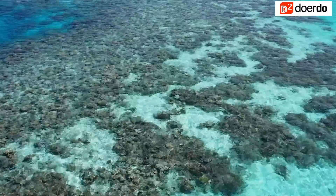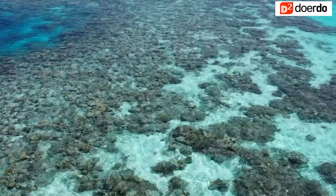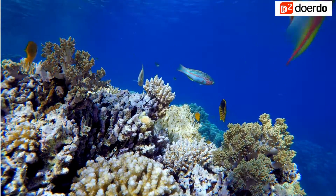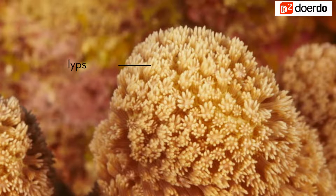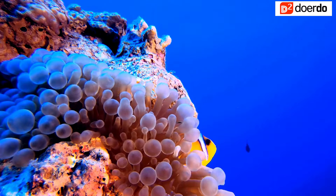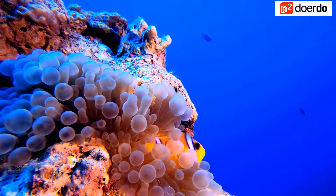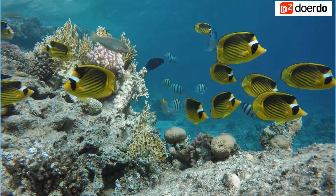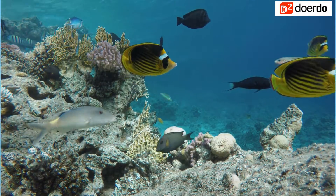Coral reefs are marine ecosystems found at, or slightly below sea level on the seabed. A coral reef is a limestone rock, which is made up of skeletons of small living organisms called polyps. These polyps secrete calcium carbonate to protect their soft delicate bodies. New coral polyps grow on top of existing coral polyps as they grow and die. Calcium carbonate skeletons accumulate as limestone over time, forming massive coral reefs.